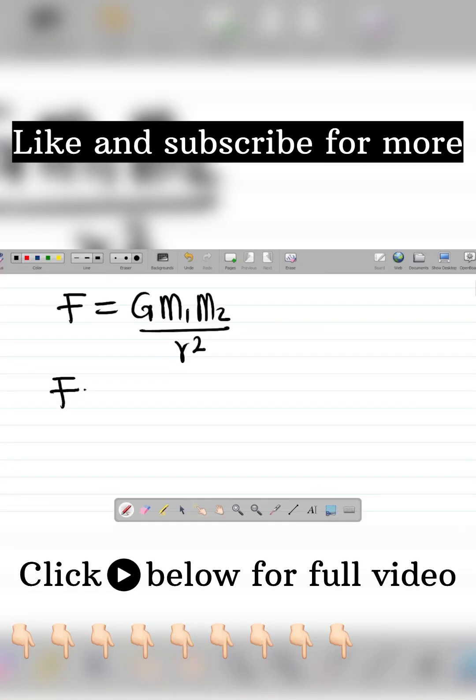The force of attraction between them will be F equal to G. G is already a constant and the value is 6.67 times 10 to the power minus 11. That's the value of G into M1.